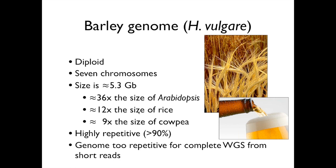What makes barley more complicated is its size — about 5.3 gigabases, roughly double the size of the human genome and the maize genome, about 36 times the size of the Arabidopsis genome, 12 times the size of rice, and about nine times the size of cowpea. We've used the same fundamental approach to BAC sequencing for cowpea for its whole genome, whereas here with barley we've focused on just the gene-enriched portion of the genome.